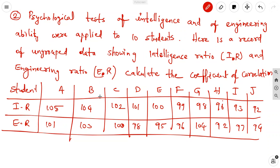The students are A, B, C, D, E, F, G, H, I, J. Intelligence ratio values are: 105, 104, 102, 101, 100, 99, 98, 96, 93, 92.